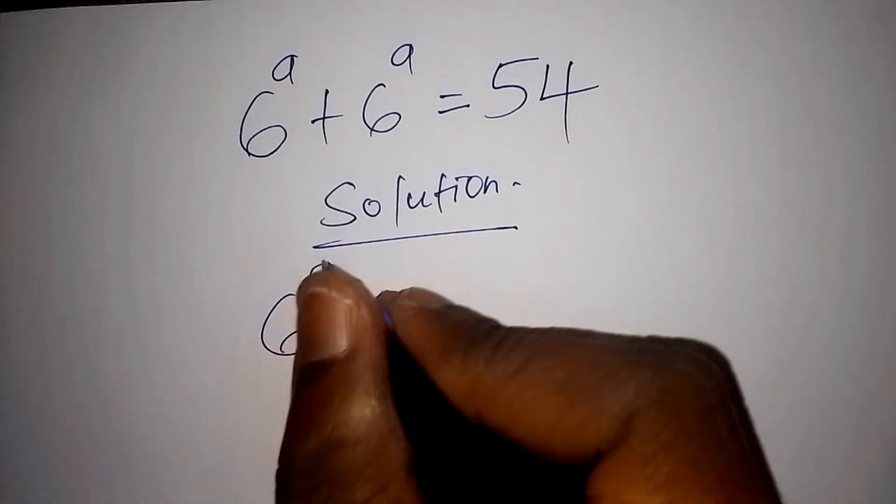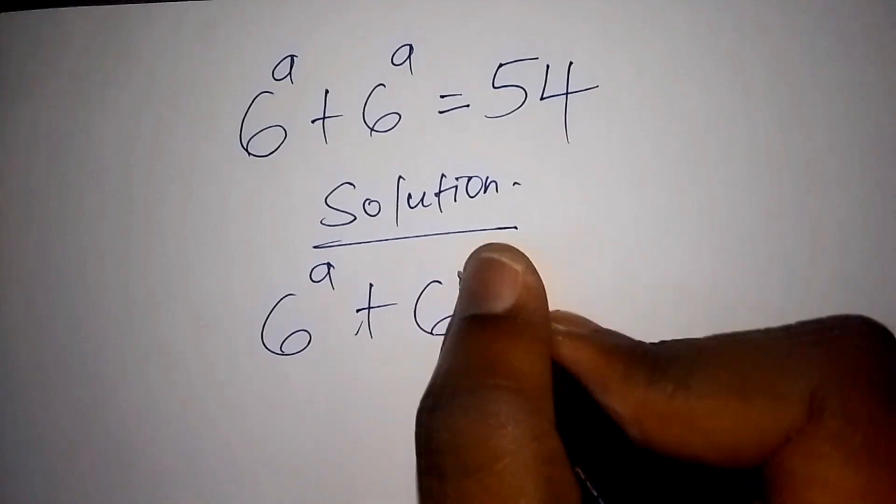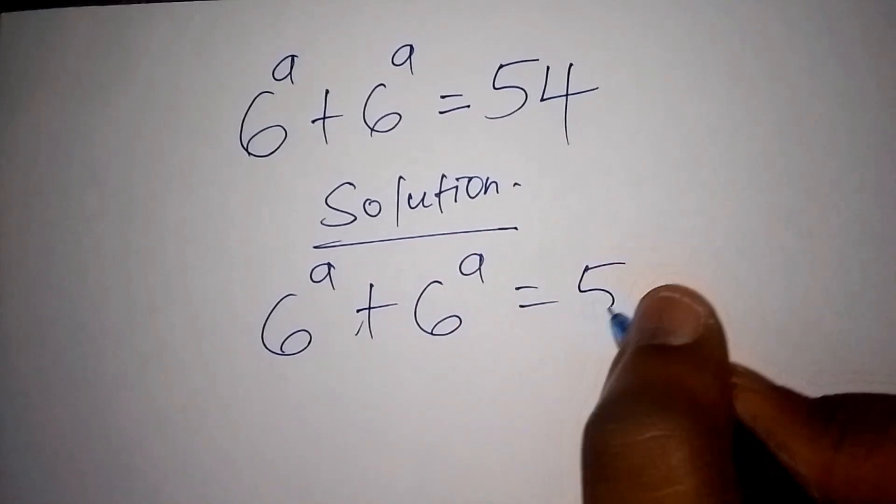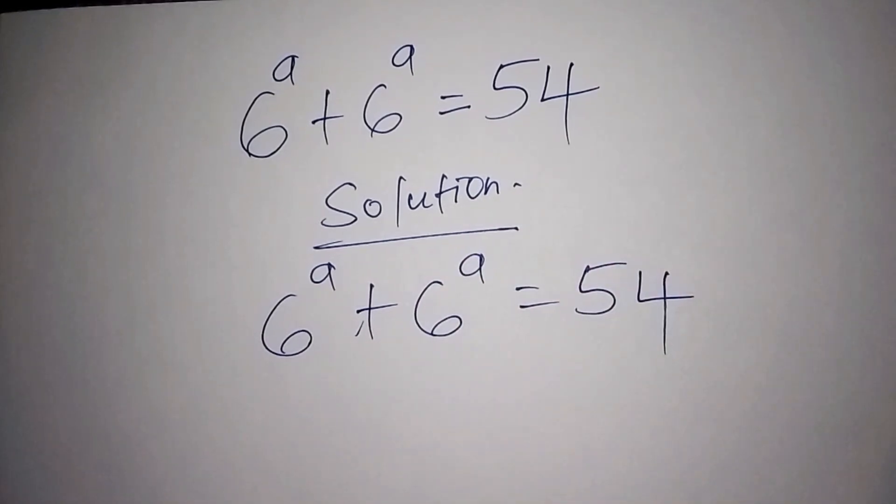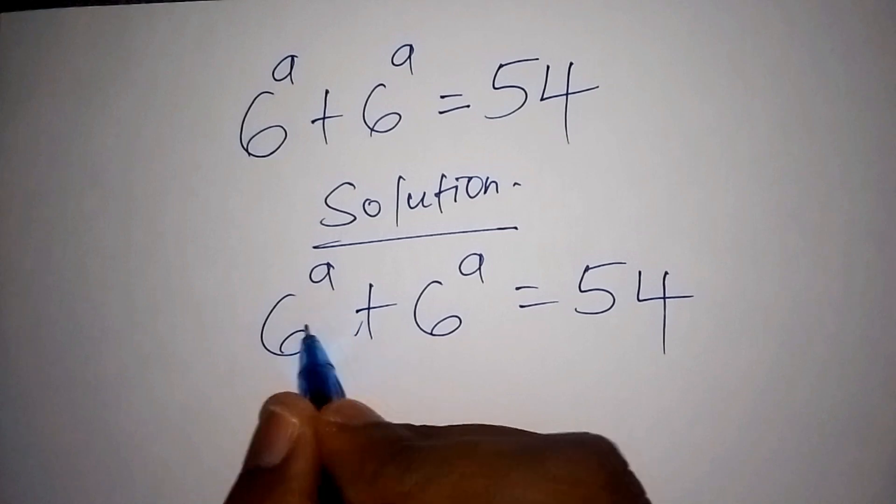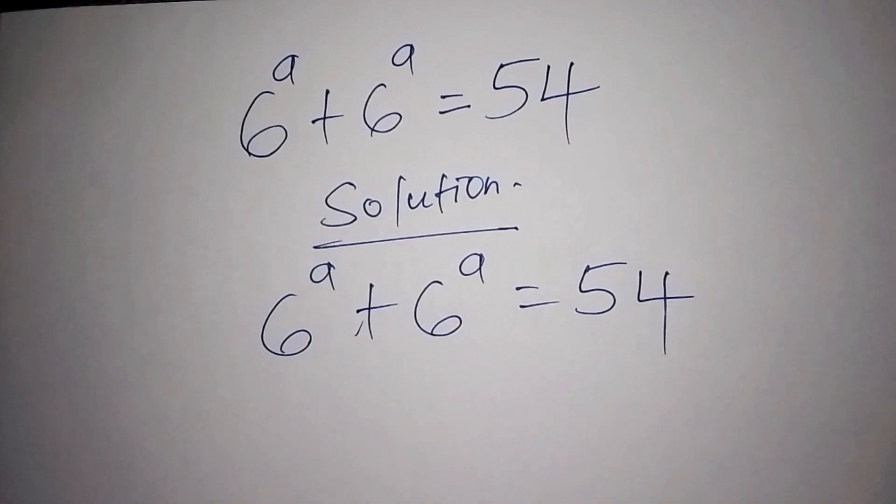So let us now write the equation. 6 to the power of a plus 6 to the power of a equals 54. The first thing that we need to do, since 6 to the power of a is common, we need to factorize it.